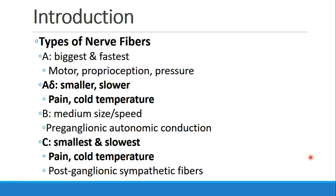Now let's go over the different types of nerve fibers we find in the nerves. There are three main types — A, B, and C — and then an A-delta subtype, which is really its own special type. The A-type nerves are the biggest and the fastest conducting. They usually serve the function of motor activity, as well as transmission of proprioception and pressure.